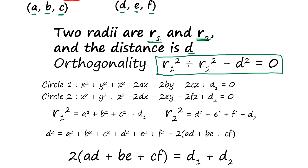So, general equation of the circle, circle one, is this way because the center of the circle is ABC plus some constant D1.